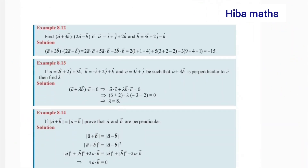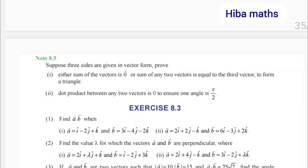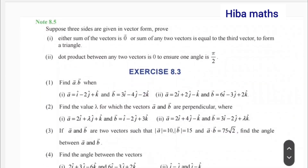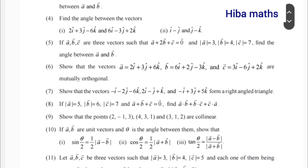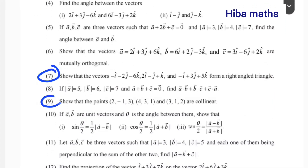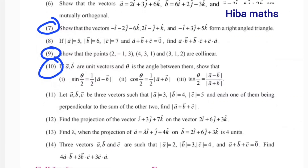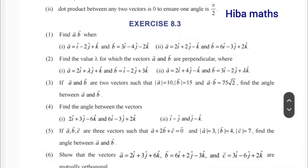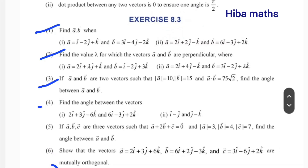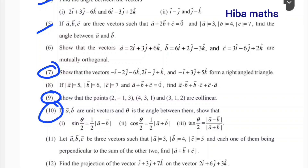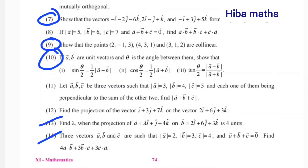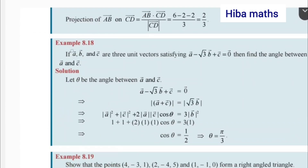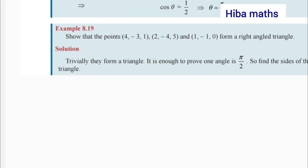Let's look at examples 8.12, 13, 14, 15, 16. If you have a co-planar question, you can see the right angle. Exercise 8.3 is 5 marks. Angle between some vectors is 5 marks; angle between some vectors is also 2 marks and 3 marks. Questions 1st through 5th, then 13 and 14. Exercise 8.3 questions 18 and 19.